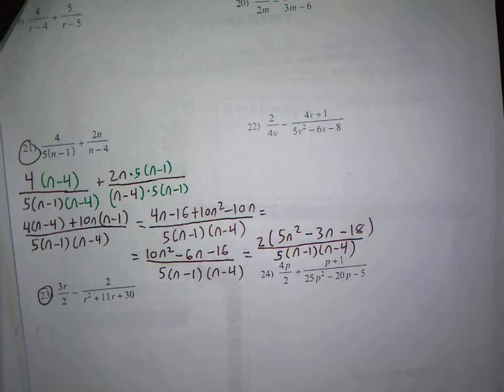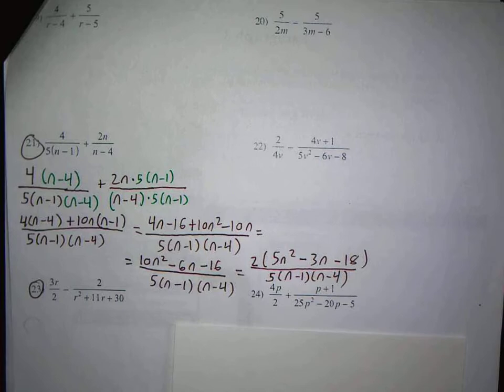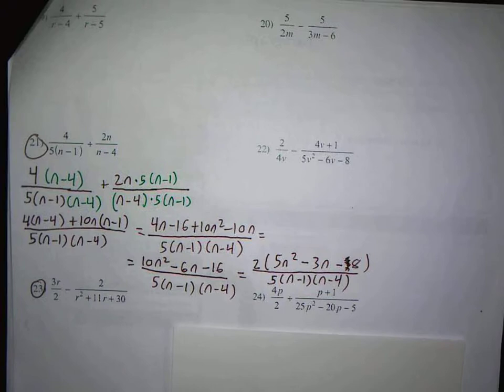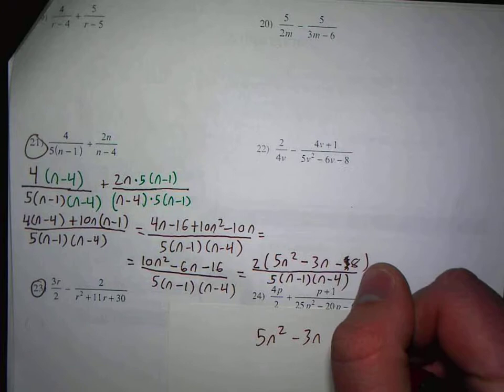Oh, did I write 8? Oh, I'm sorry. Yeah, you're right, thank you. That should be 8. Maybe I could factor 5n squared minus 3n minus 8. Maybe, maybe not, we'll find out.